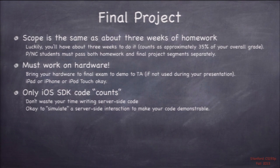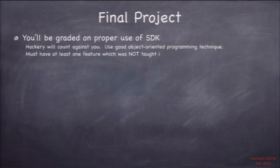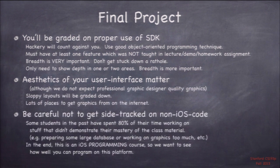The scope is basically three weeks of homework worth of work. Pass/credit students have to pass both the homework section and the final project separately. Your final project has to work on hardware — you have to show it working either in your two-minute demo or show your TA. Only iOS SDK code counts; if your app has a back end, you get no credit for that. You'll be graded on proper use of the SDK, proper object-oriented programming, and your UI aesthetics.